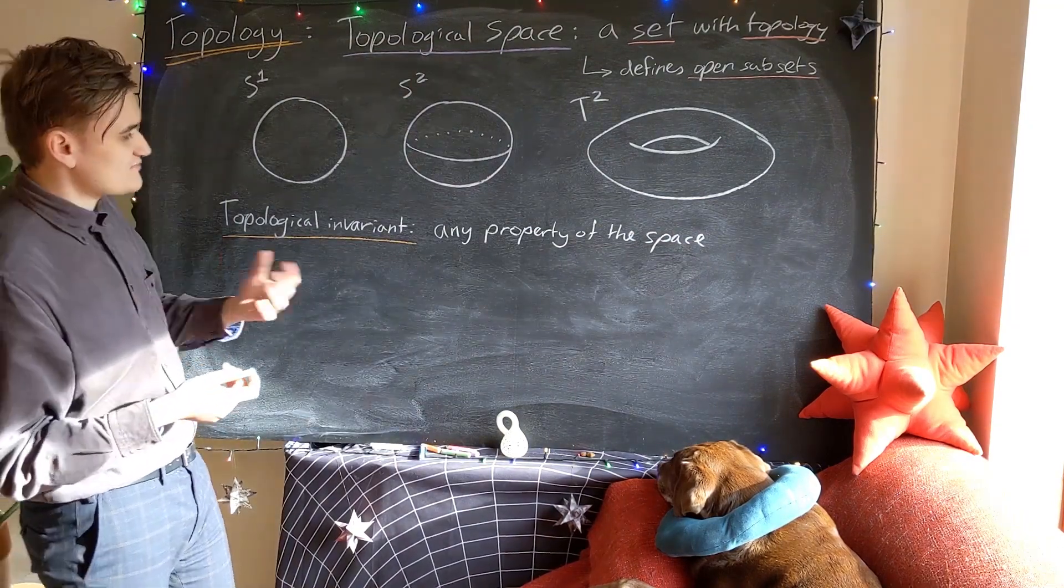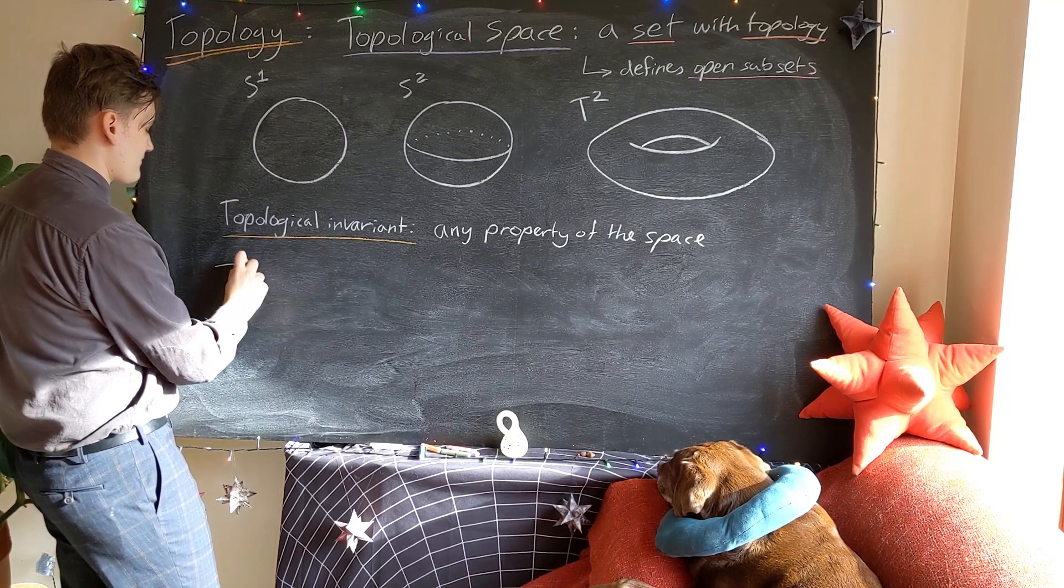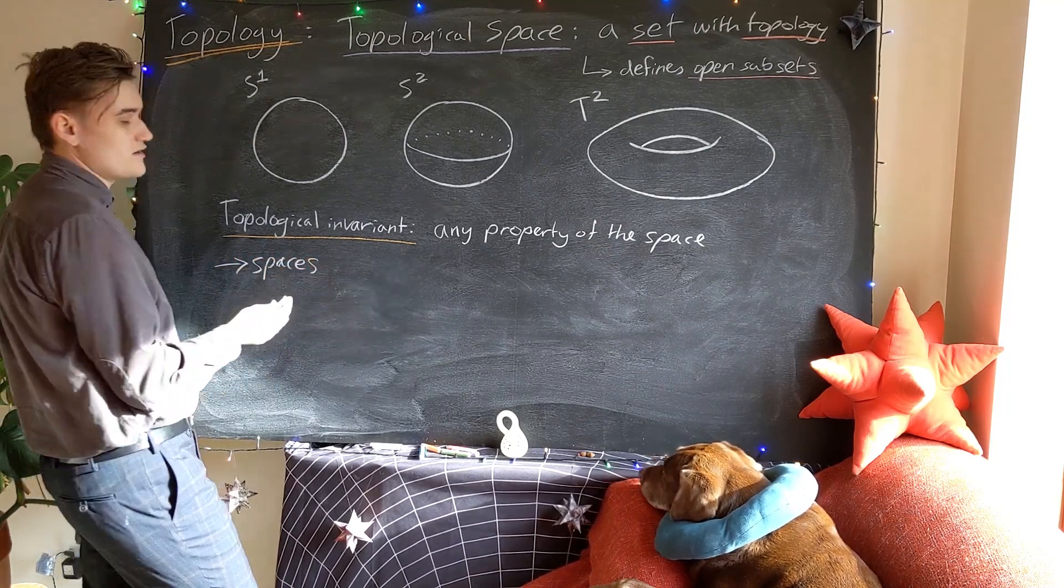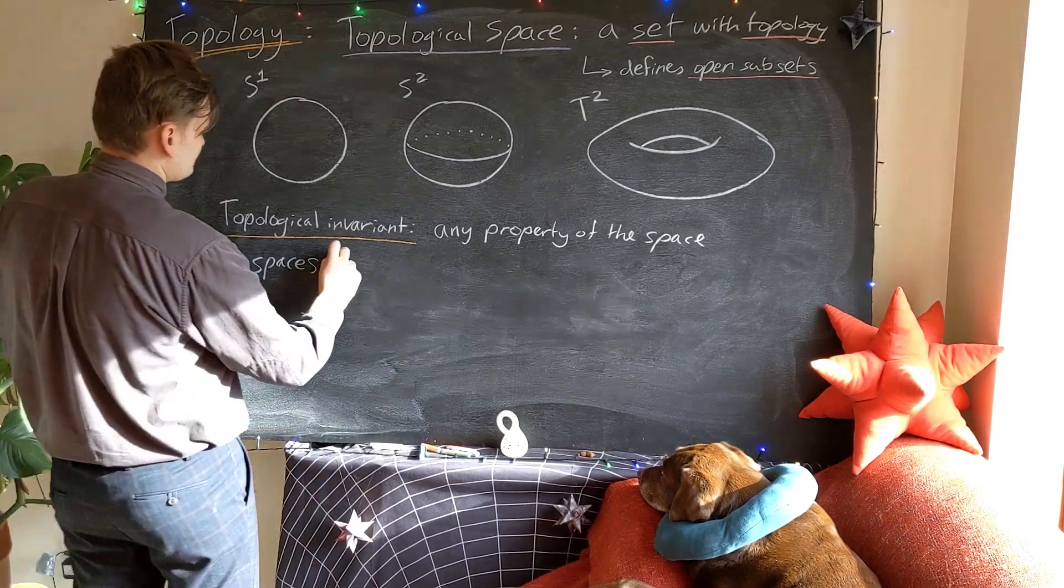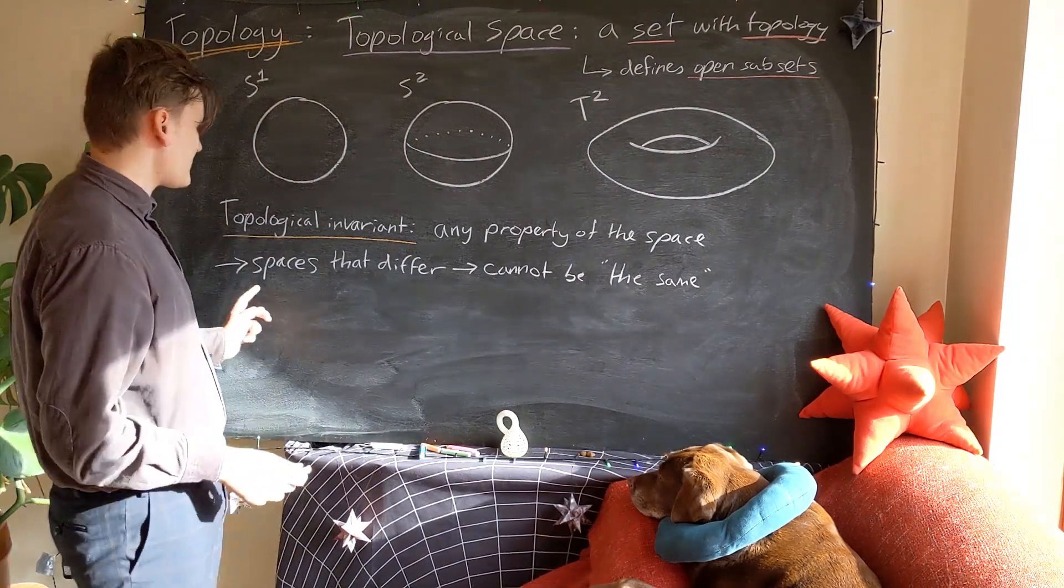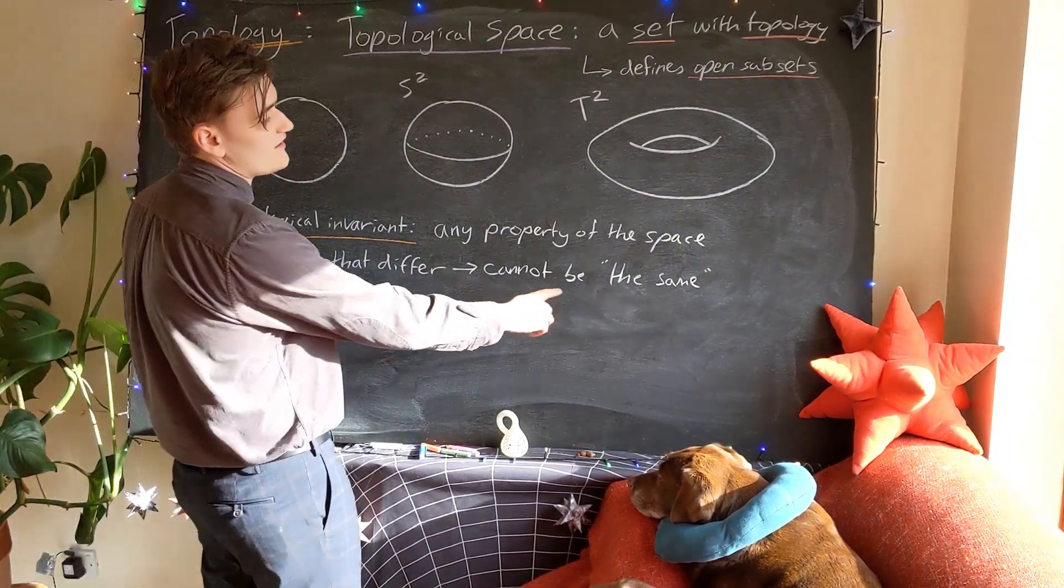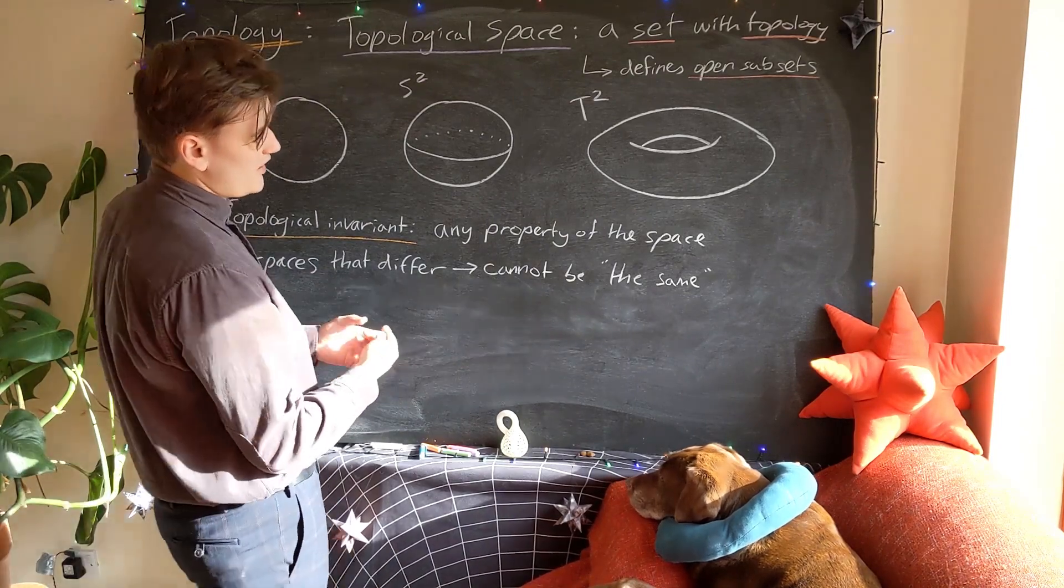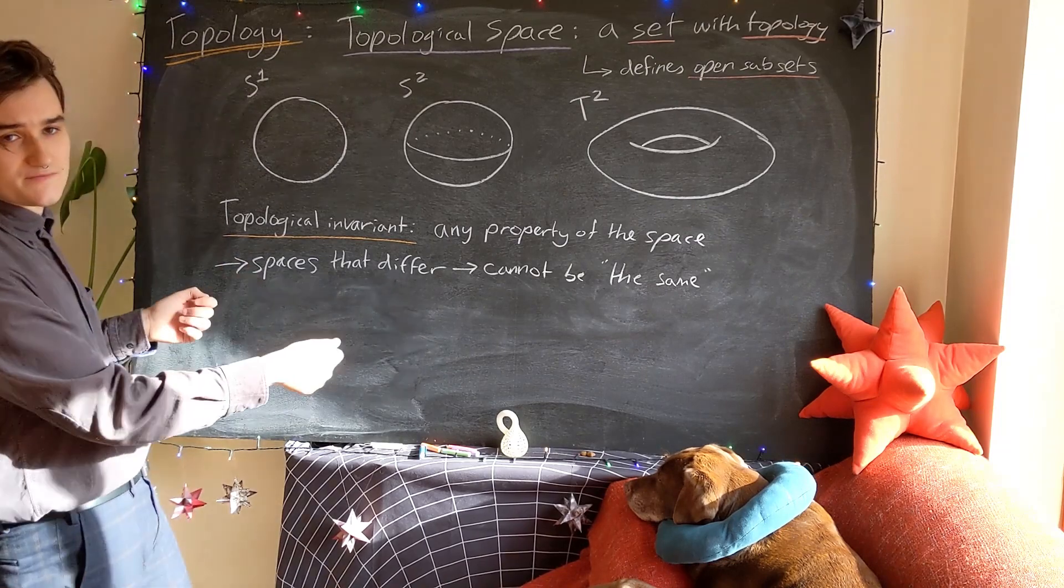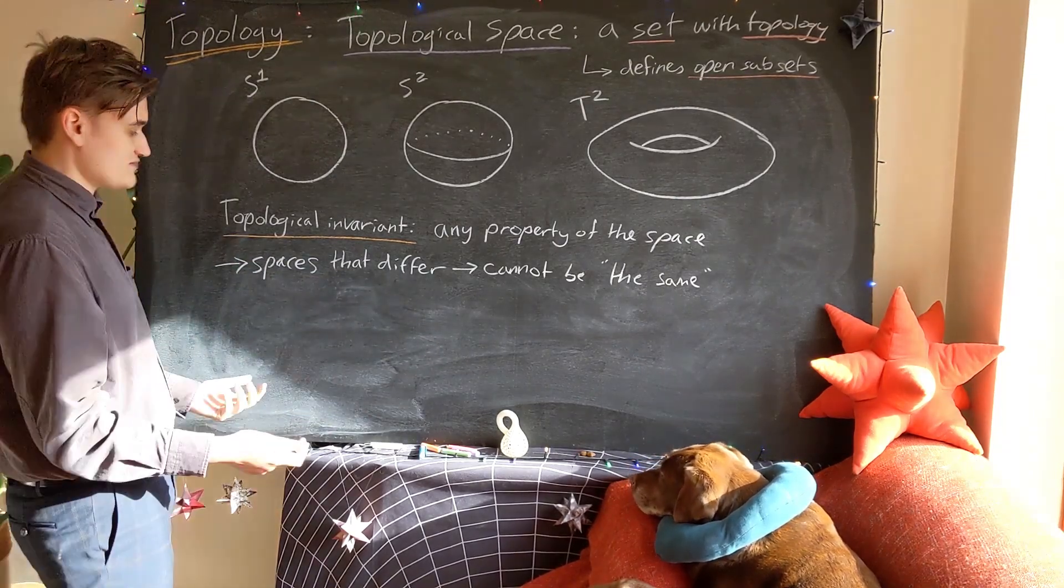So I'll just say now a topological invariant is any property of the space. And now the way that we use these properties to classify spaces is that we say spaces that don't have the same topological invariants, so spaces that differ on any of their topological invariants cannot be the same. What do we mean by the same? Well, essentially we mean that we can smoothly deform one of the spaces into another. So let's see an example of this.